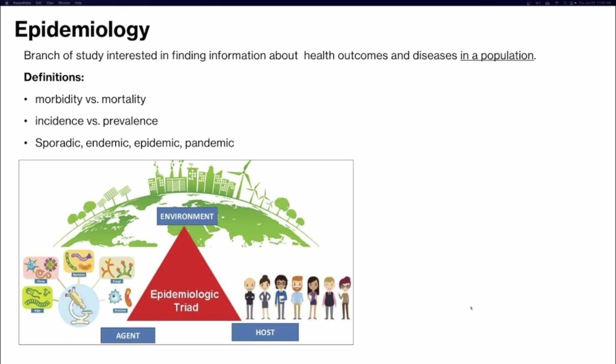Epidemiology is the branch of study interested in finding information about health outcomes and diseases in a population. Key definitions: morbidity is the presence of the disease — experiencing signs and symptoms. Mortality is death as a result of that disease. Incidence is the number of new cases — like water going into the epidemiologist's bathtub. Prevalence is the accumulation of cases over a certain period of time — the accumulation of water in the bathtub.